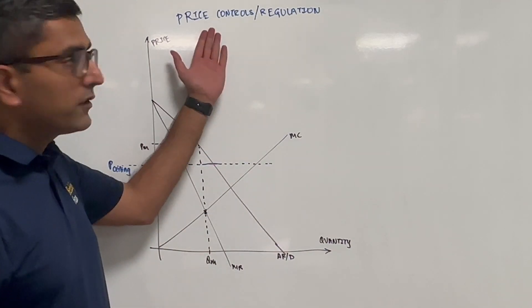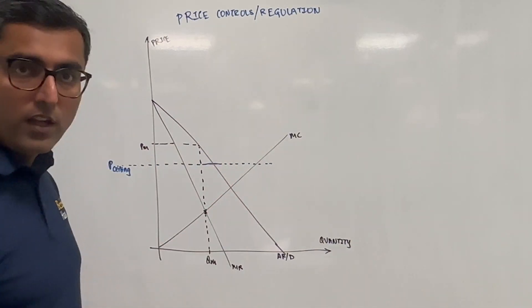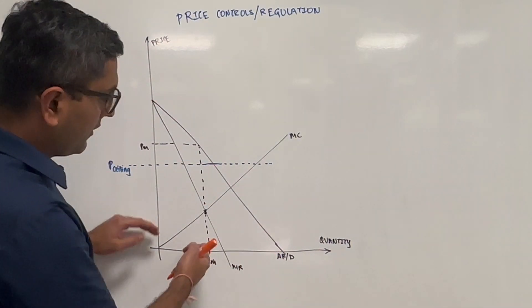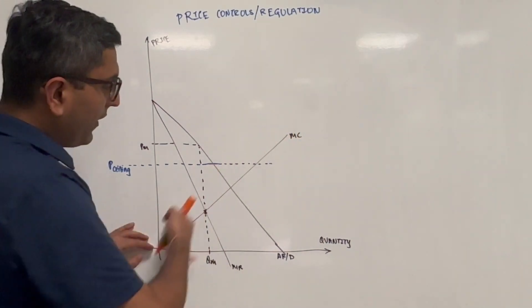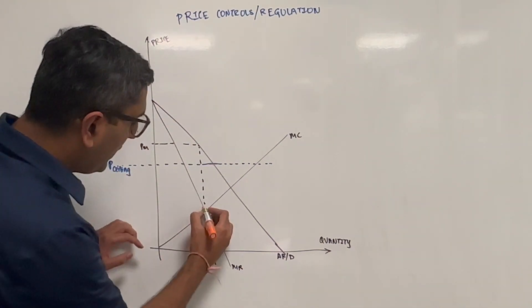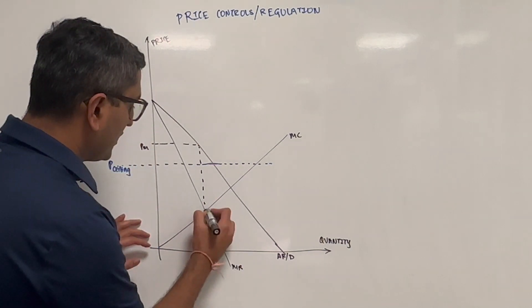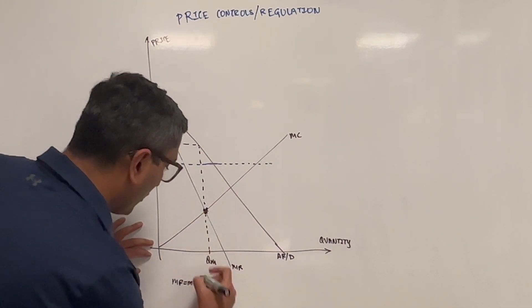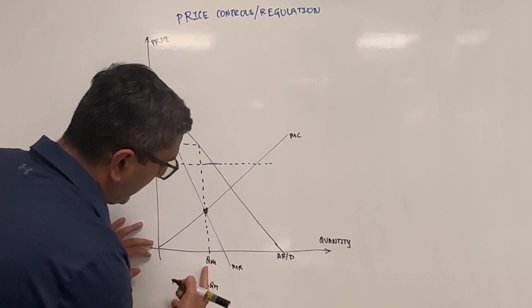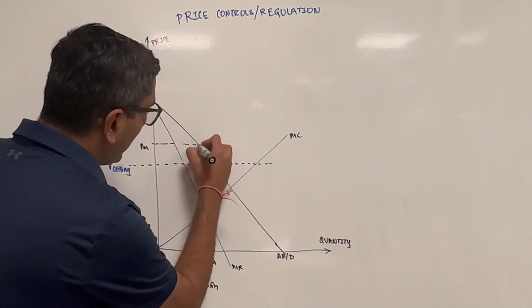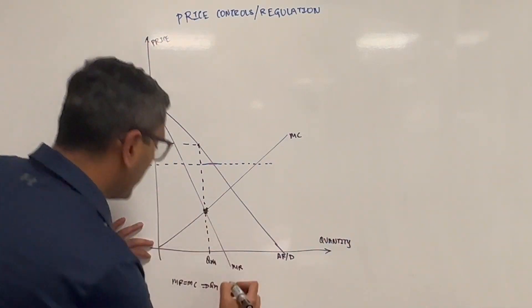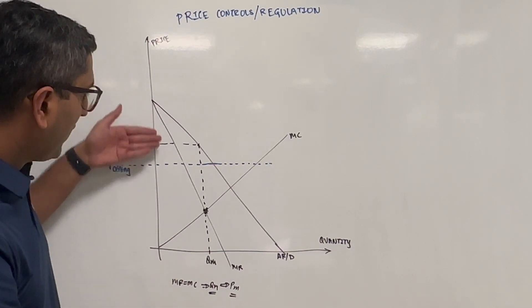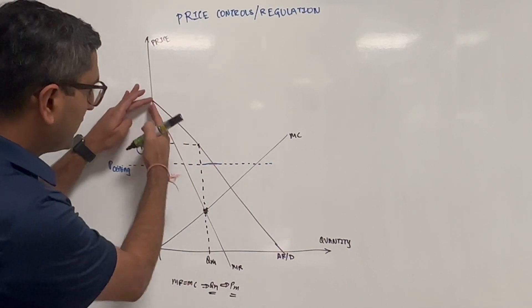Let's look at how price controls or price regulation impacts a monopolist. A monopolist would have the marginal revenue curve, the average total revenue curve, and a demand curve which is different, and we will have the marginal cost curve. Without price control regulation, the monopolist looks at MR equals MC to find the quantity, then looks at the demand curve to find the price. From this we get the producer surplus and the consumer surplus.